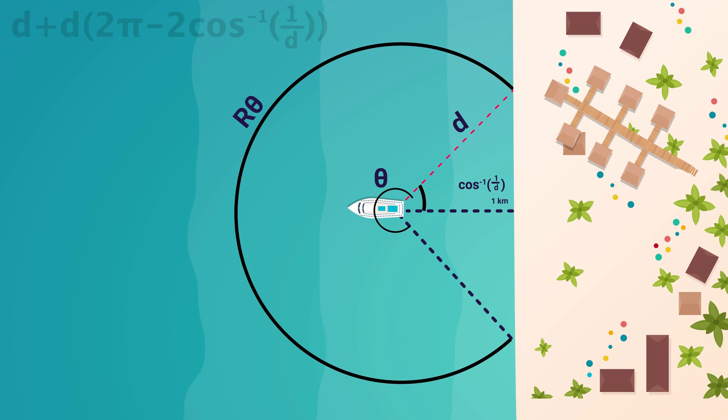One of those inner angles would have a value of cosine inverse of 1 over D. So this would be the equation for the total distance traveled, in regards to the worst case scenario, for any value D. This part here is just R times theta, or 2 pi, the full circle, minus those inner angles.